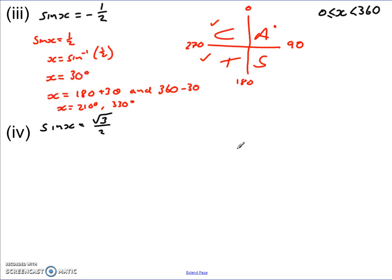Last one, looking at sin x is equal to root 3 over 2. Again, look at the CAST diagram. It's positive, so we know it's in the A and the S region. So again, we could just find the first region here by taking sin minus 1, and then use that to get the second solution.